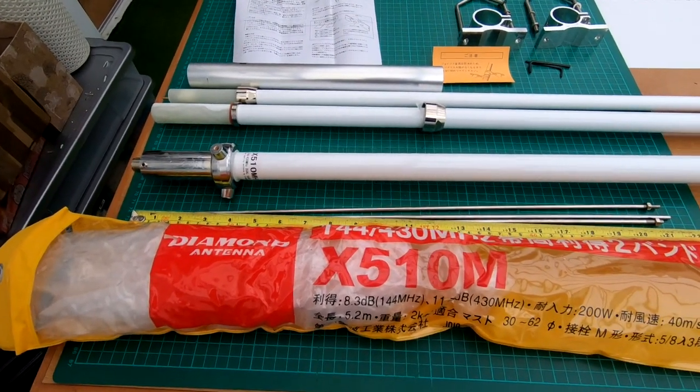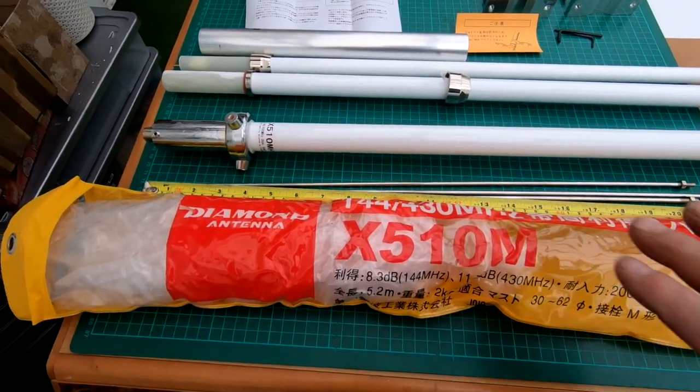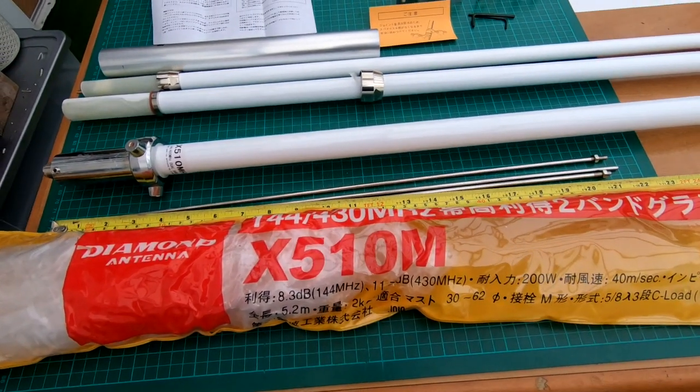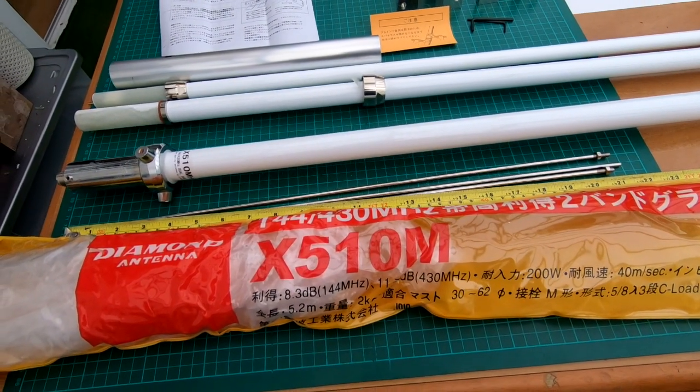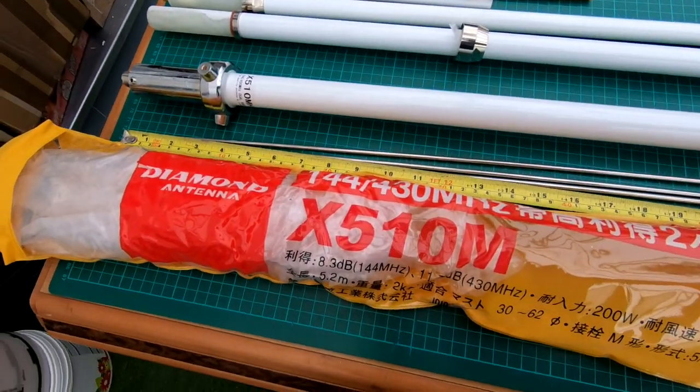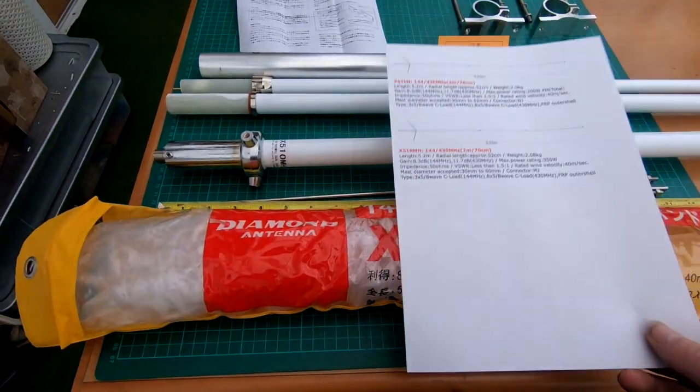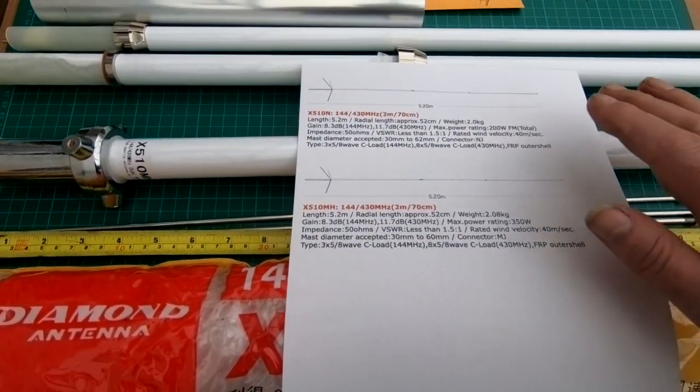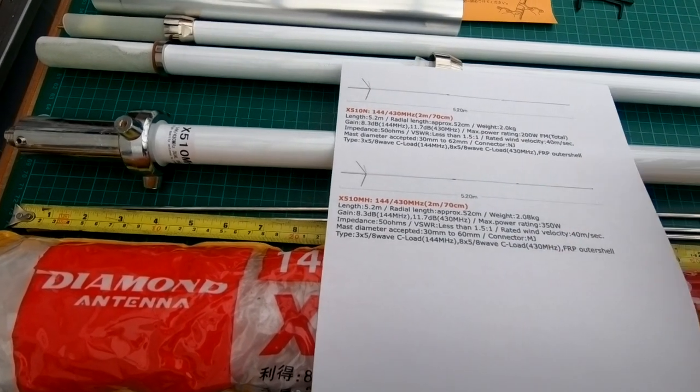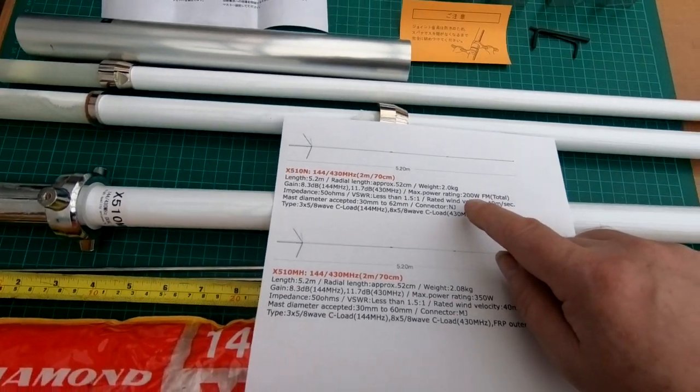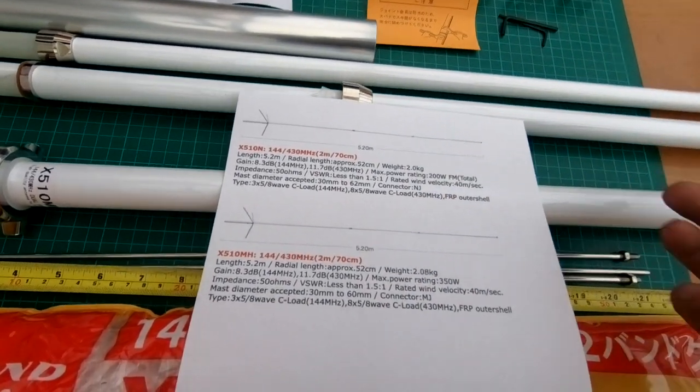Diamond X510 MH. The packet came saying Diamond X510 M, which I thought instantly I got to send this back. I'm really looking for a 300 watt version or 350 watt. The difference between the standard N is everything the same - 5.2 meters long, gain everything. Can't find any differences in the spec other than the standard version is only rated at 200 watts.